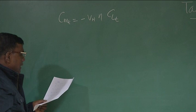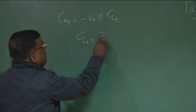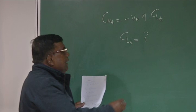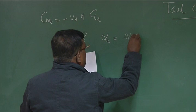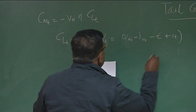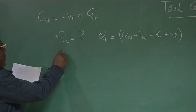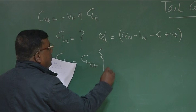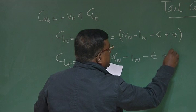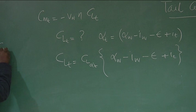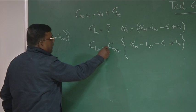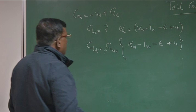What is C_L_T? C_L_T is the lift coefficient at the tail. The angle of attack at the tail, alpha_t, equals alpha_w minus i_w minus epsilon plus i_T, where i_T is the tail setting angle. So C_L_T equals C_L_alpha_tail into (alpha_w minus i_w minus epsilon plus i_T). Note that there is no C_L0 term here because the tail is generally symmetric — that is why C_L0 is absent.